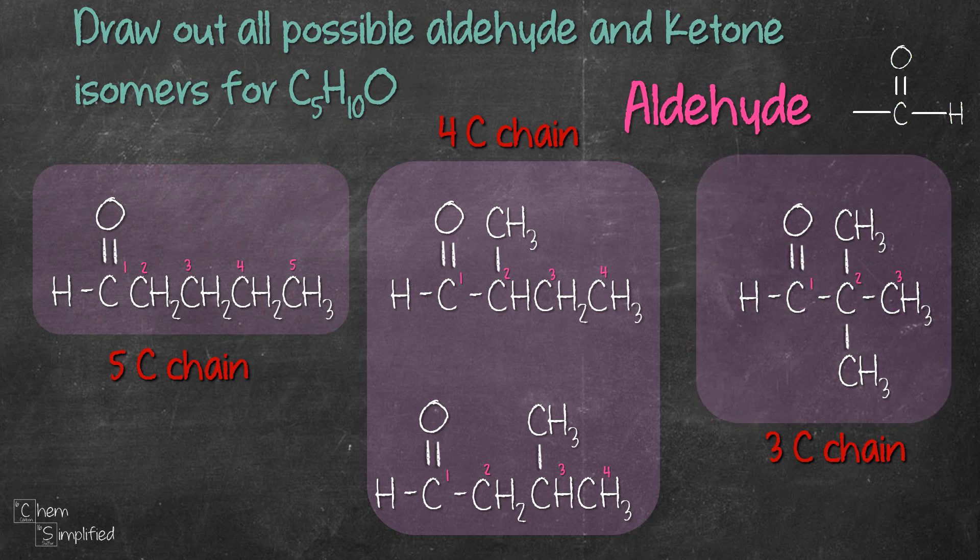Since we can't shorten the chain anymore we know that we have already drawn out all isomers for aldehyde and we did it in a very systematic way. This increases our probability for drawing all isomers correctly and with zero errors.